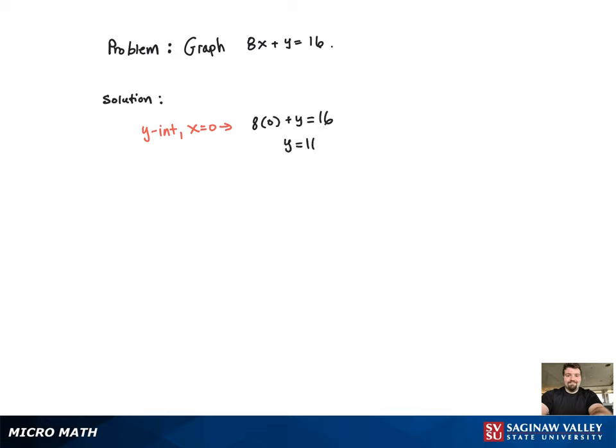So first solving for the y intercept, we're going to set x equal to 0. Doing so, we get y equal to 16, and now you can see the point that that represents. That's the point 0 comma 16.